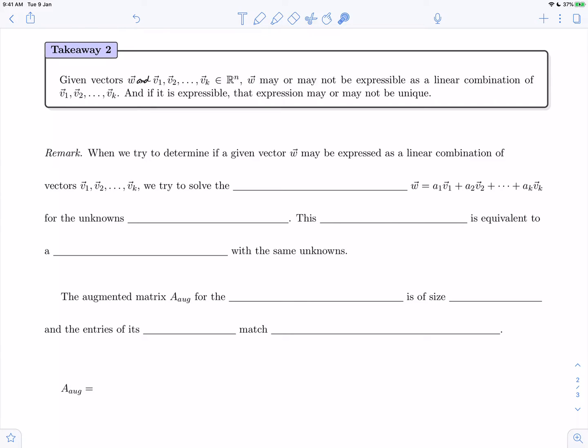So to recap what we did in the previous videos, when we are trying to determine if a given vector w can be expressed as a linear combination of vectors v1 through vk or not, we try to solve the vector equation w equals a1v1 plus a2v2 all the way up to plus akvk.